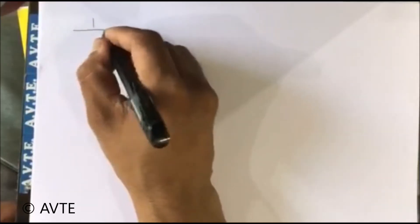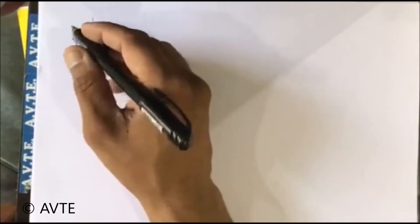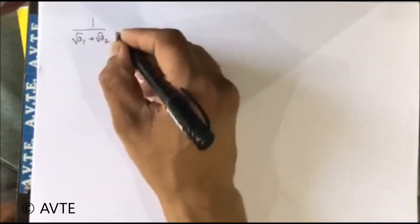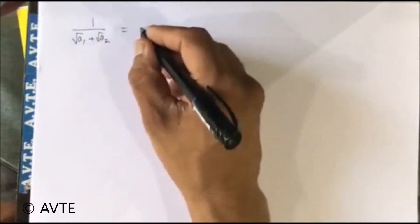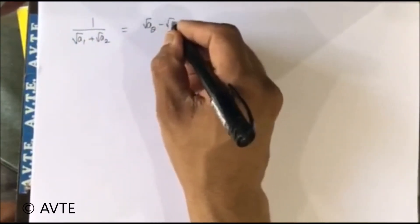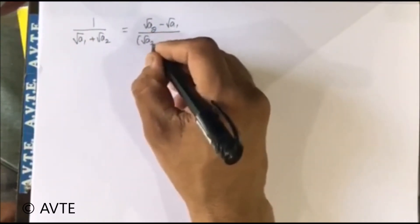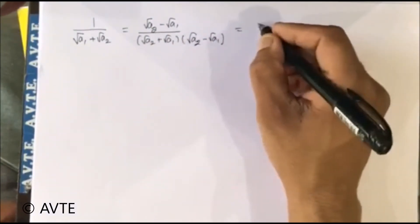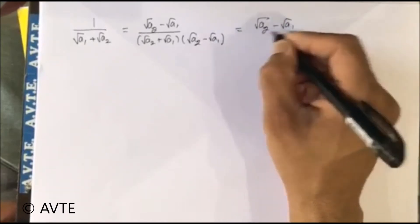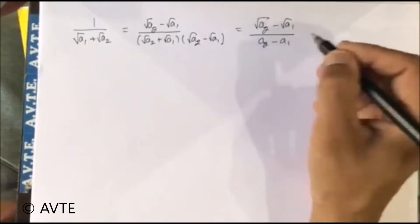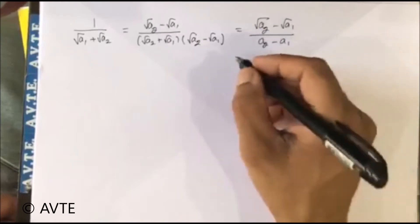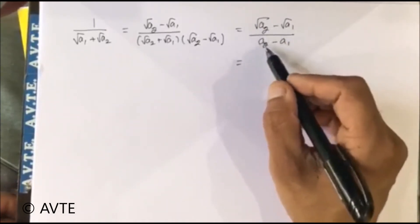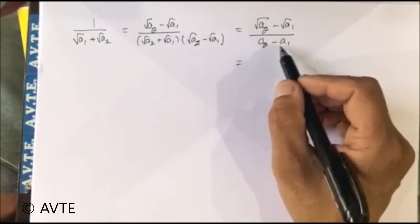After rationalization, the denominator equals d, because the denominator is indicating second term minus the first term.